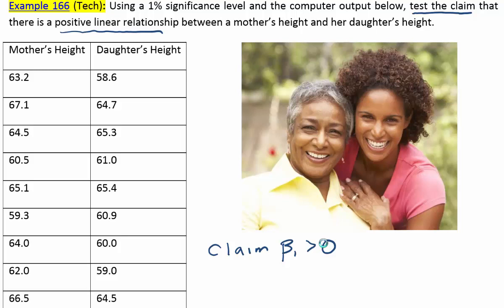So there's no hat on this beta 1 because it's the population beta 1 value, the theoretical true slope. And we're testing the claim that that relationship is positive, so positive means greater than 0. And a positive relationship just means that taller mothers will generally produce taller daughters. We can then express the H0 and HA associated with this claim. H0 would be that beta 1 is less than or equal to 0. And HA would be the same as the claim because it has that greater than symbol, which is one of HA symbols. So we'll just say beta 1 greater than 0 for HA. The significance level in the problem is 1%, so alpha is equal to 0.01.